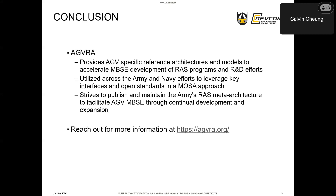That concludes the applications of AGVRA across the DoD. In conclusion, AGVRA provides autonomous ground vehicle-specific reference architectures and models, which helps accelerate MBSE development of RAS programs and R&D efforts. It can be utilized across Army and Navy efforts to leverage key interfaces and open standards in the MOSA approach, and strives to publish and maintain the Army's RAS meta-architecture to facilitate AGV MBSE through continued development and expansion. The AGVRA website at agvra.org provides more information including diagrams and contact information.